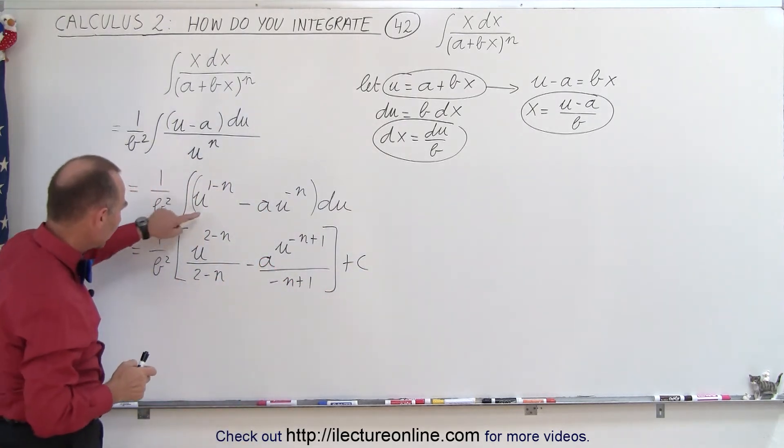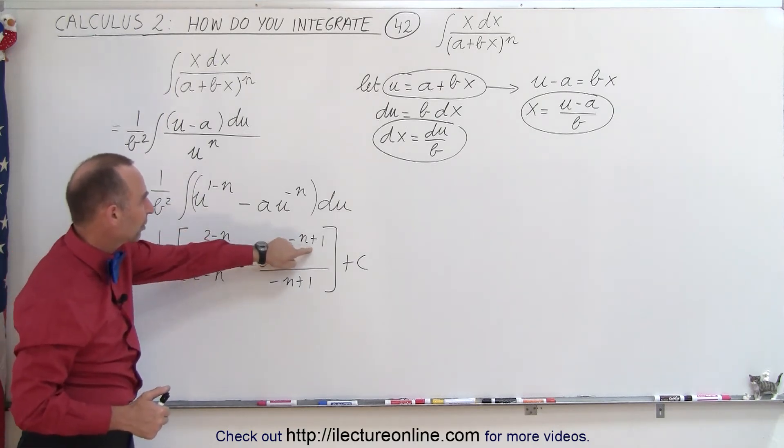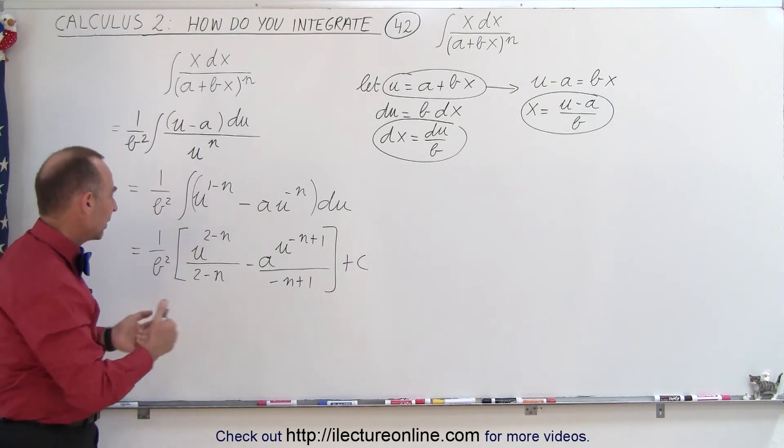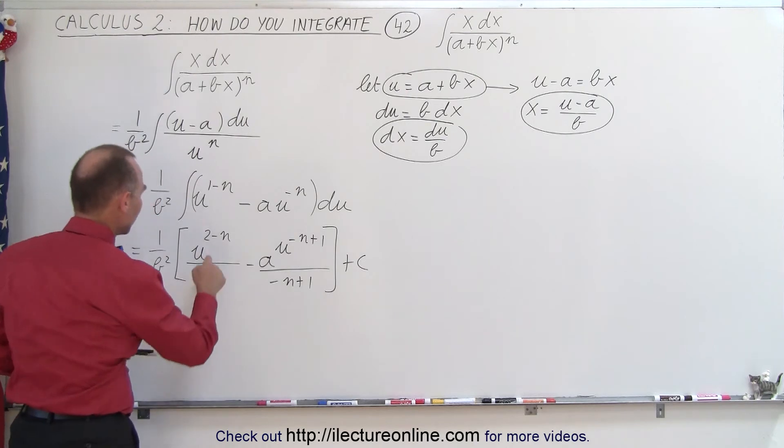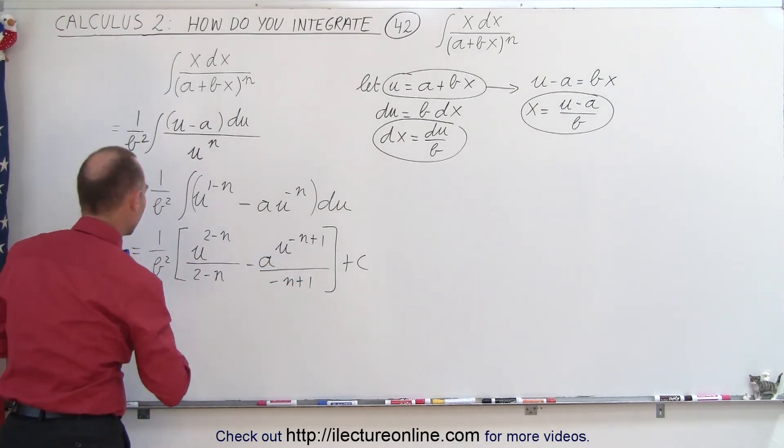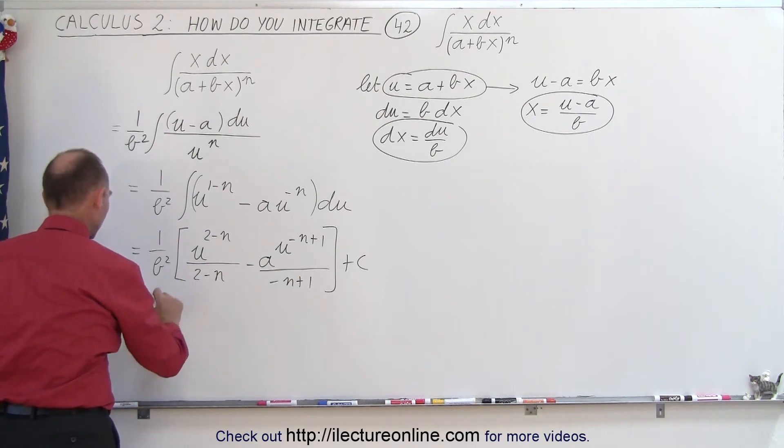So let's take a quick look here. So we add 1 to the exponent becomes 2 minus n, add 1 to the exponent minus n plus 1, or we could have written 1 minus n and divide by the new exponent. So now let's clean that up just a little bit. So we can bring this back to the denominator and bring this back to the denominator and see what happens.